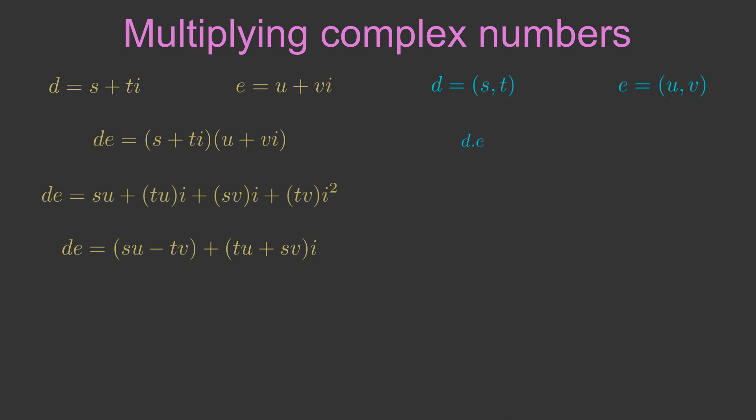Vectors support two types of multiplication. The dot product, which produces a scalar value. And the cross product, which only applies to 3-vectors, not 2-vectors. So what can we do instead?